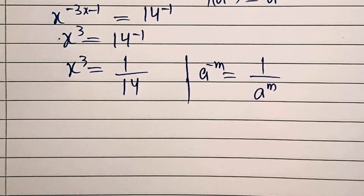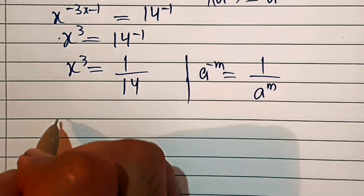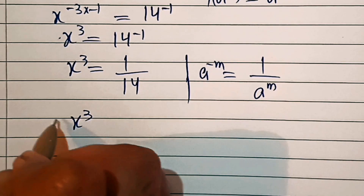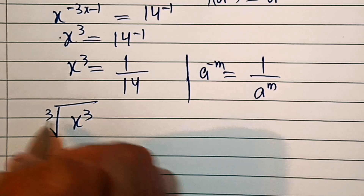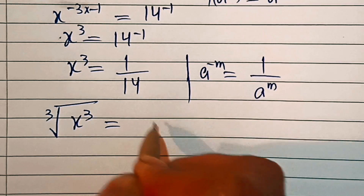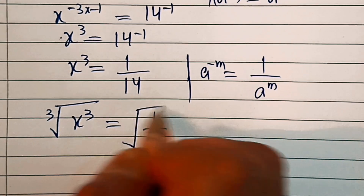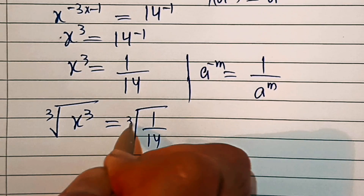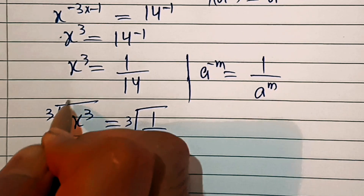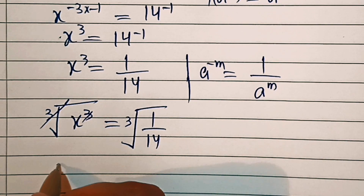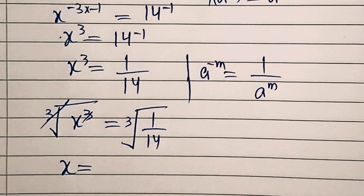Now we will apply the cube root on both sides. So this will be x cubed under cube root equal to 1 by 14 under cube root. The cube root and the cube will get cancelled out, so we can write x is equal to the cube root of 1 by 14.